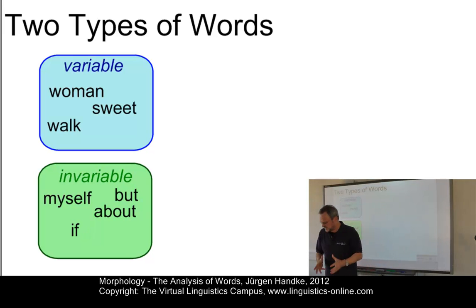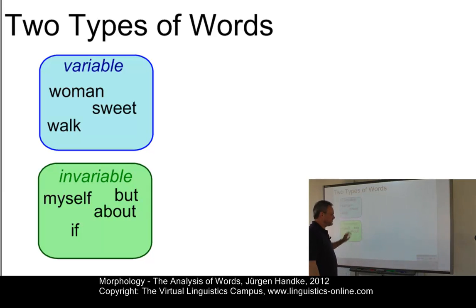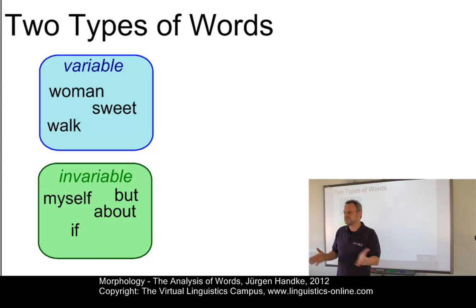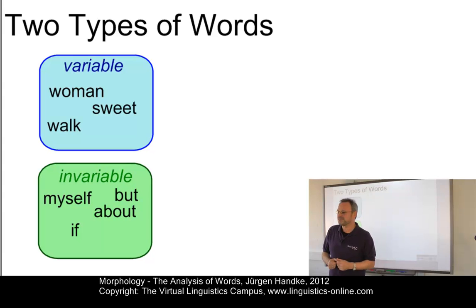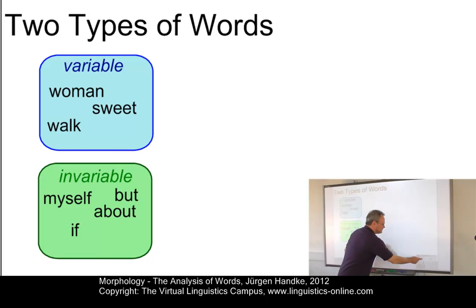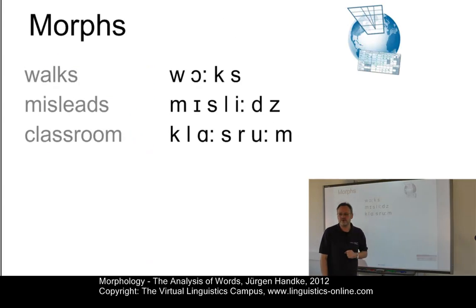There are some languages that have by and large, if not exclusively, invariable words. Such languages are called isolating or analytic languages, and typical examples are Chinese or Vietnamese. So if you want to become a morphologist, don't move to China — there is hardly anything to do because most words are invariable and cannot be analyzed into further component parts. But in English this is possible.